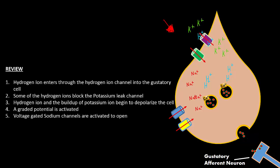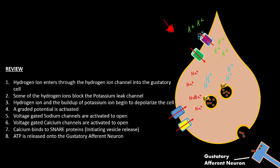Voltage-gated sodium channels are activated to open. Voltage-gated calcium channels are activated to open. And calcium binds to the SNARE proteins initiating vesicle release. And then ATP is released onto the gustatory afferent neuron, which causes an action potential to result going to the gustatory cortex of the brain, telling you that you just tasted something sour.